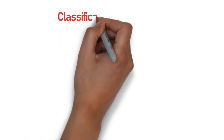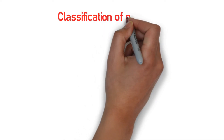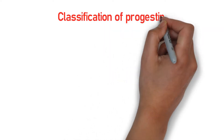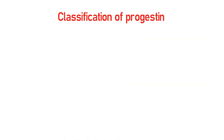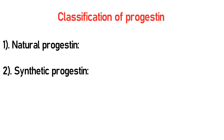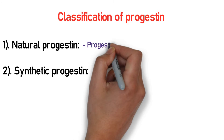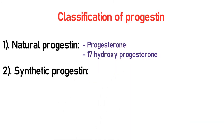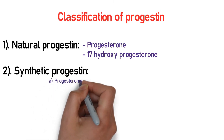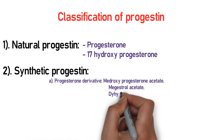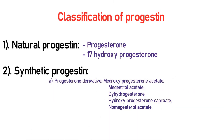Progestins are classified into two main types: natural progestins and synthetic progestins. Naturally occurring progestins include progesterone and 17-hydroxy progesterone. Synthetic progestins are further divided into two types: progesterone derivatives and 19-nortestosterone derivatives.